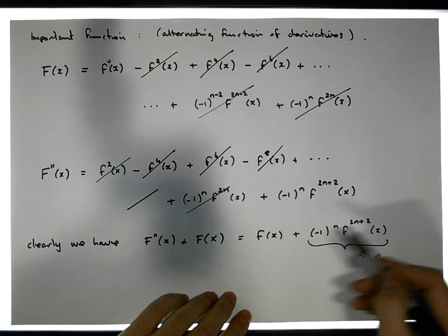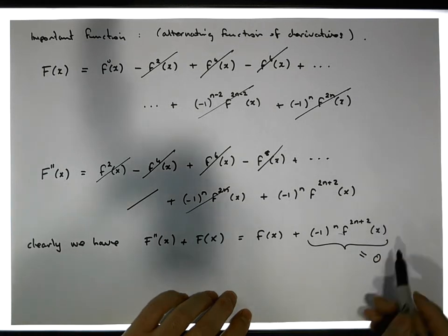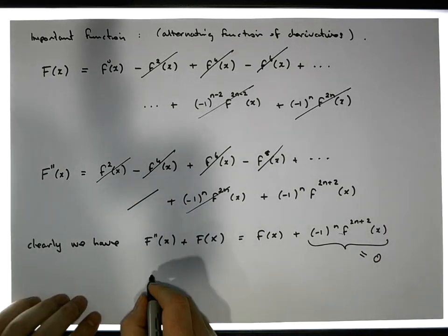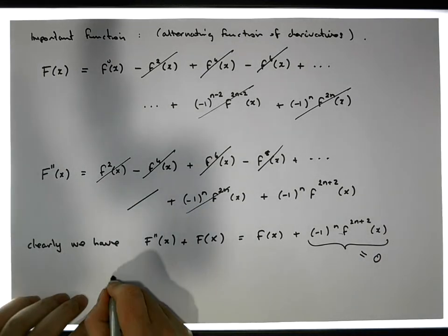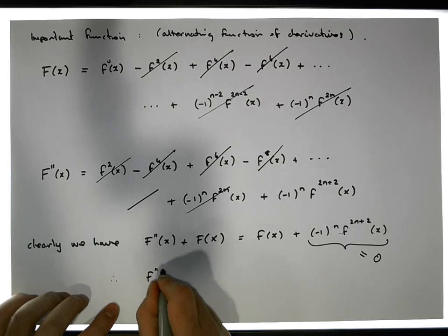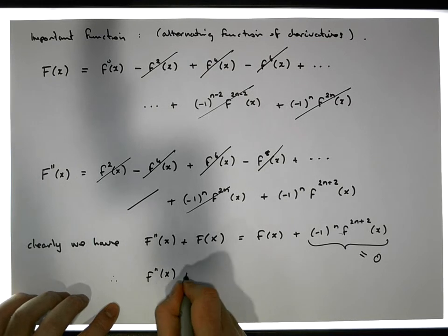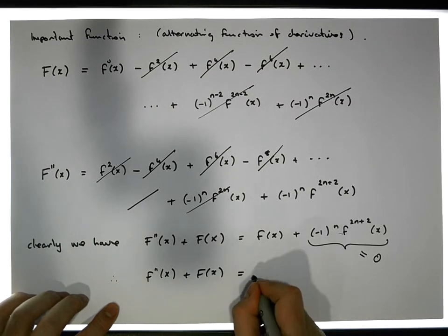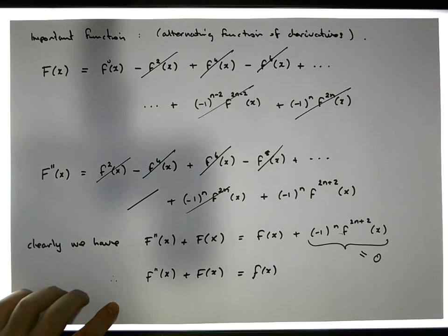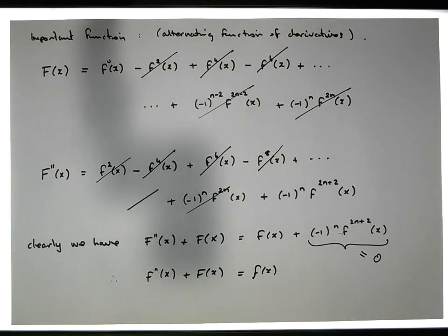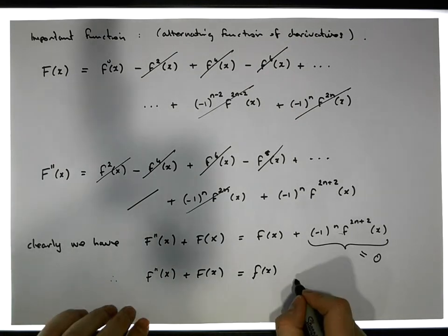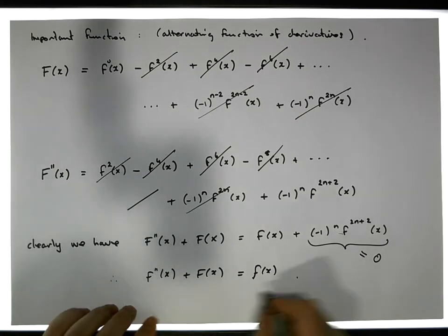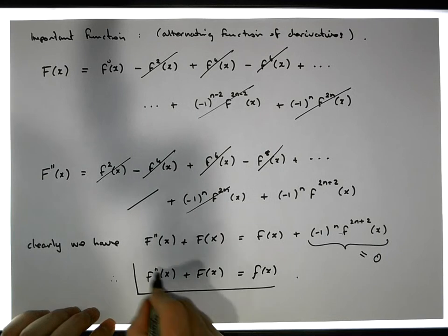So what we end up with is: F double prime of x plus F of x is actually equal to our original function f of x. This is really, really important for us going forward.